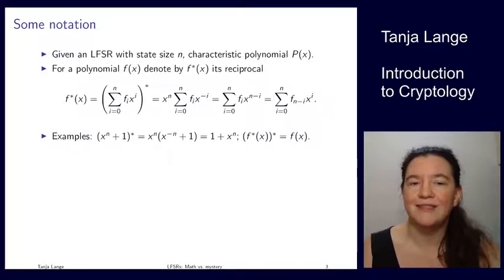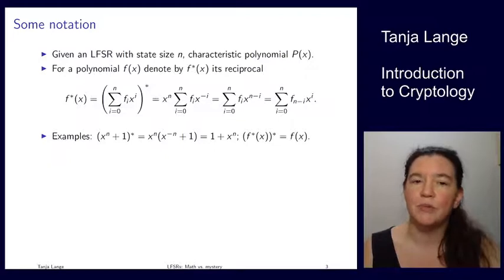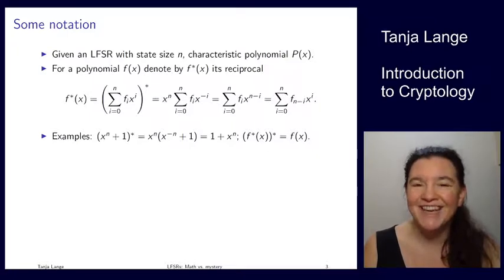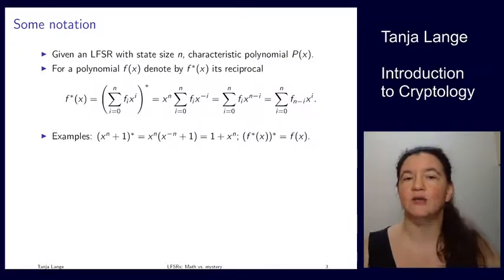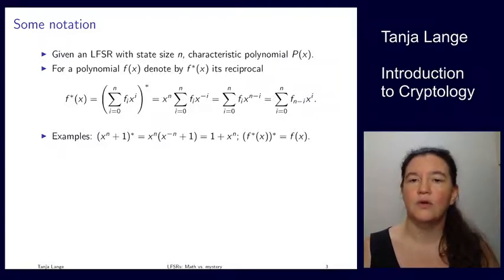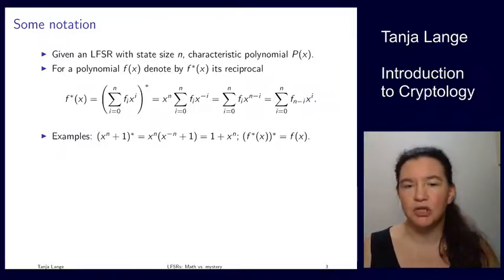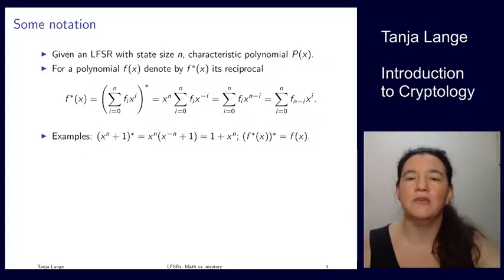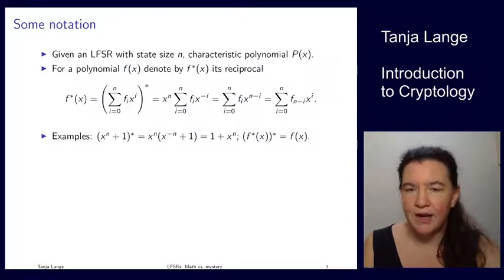To see an example, here are the default examples. If you take x to the n plus 1, the degree is n, so we multiply by x to the n and change from x to the n to x to the minus n. Those two cancel out, giving us 1 for that term, and then we get x to the n. So for this particular polynomial, it is equal to its reciprocal. Also, if you do this twice, you're just flipping and flipping back, so obviously you get the polynomial back after doing it twice.